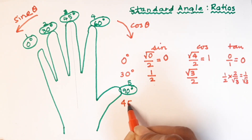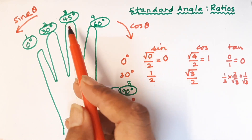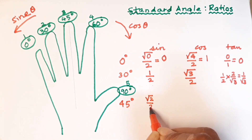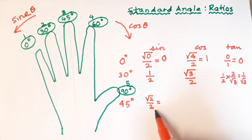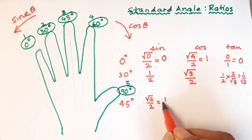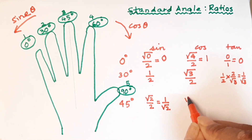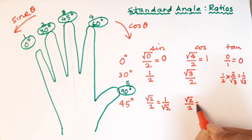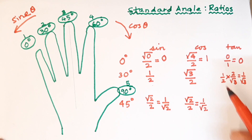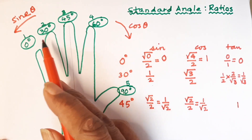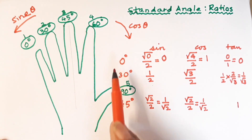Now we come to 45 degrees. For sine of 45°, there are two fingers on the left, so we take root of two divided by two — root two is root two times root two, one root two cancels, giving one upon root two. For cos of 45°, there are also two fingers on the right, giving exactly the same: root two divided by two, which is one upon root two. Tan of 45° is sine upon cos: one over root two divided by one over root two, which gives one.